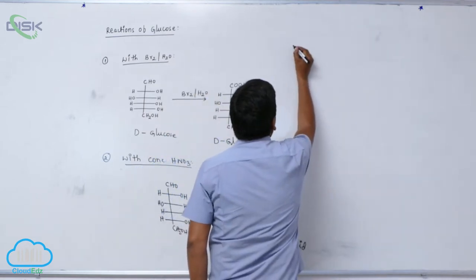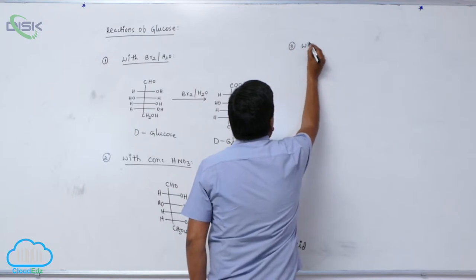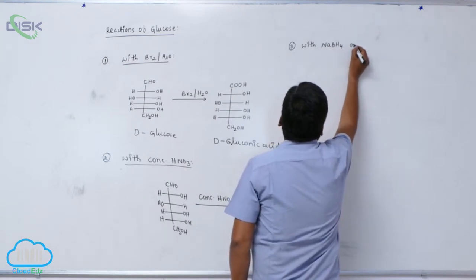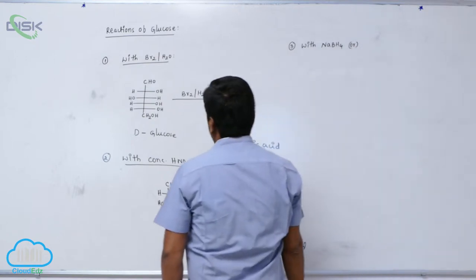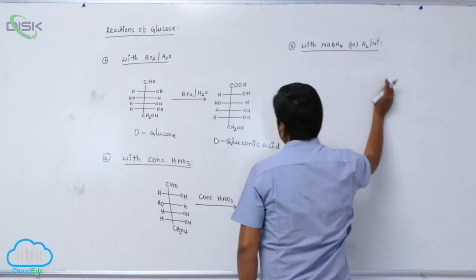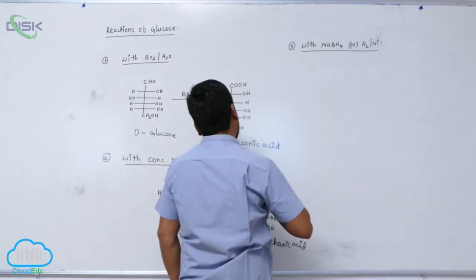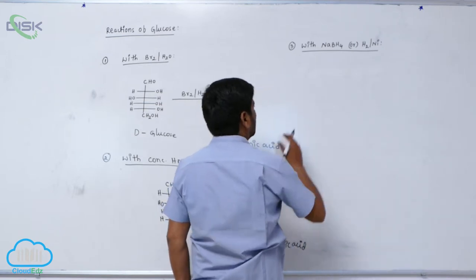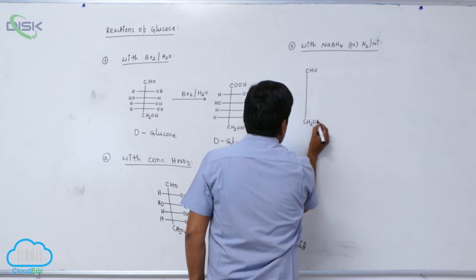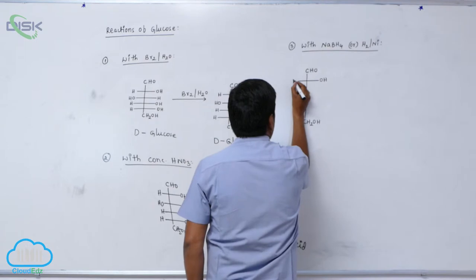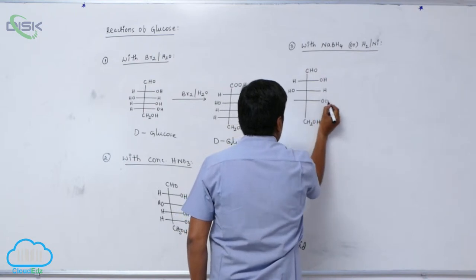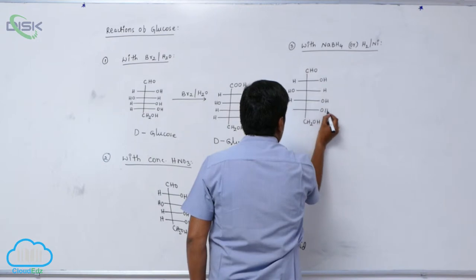Third reaction: with sodium borohydride, or hydrogen in the presence of a nickel catalyst — a reducing agent. In D-glucose: second carbon OH is right, third carbon OH is left, fourth carbon OH is right, fifth carbon OH is also right.